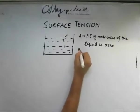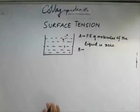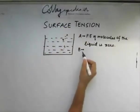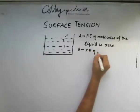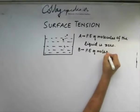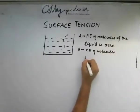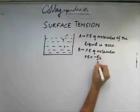If we consider the point B, which is just at the surface of the interface of this liquid, let's say this is surrounded by air. At B, the potential energy of molecules is PE equals minus Eb by 2.